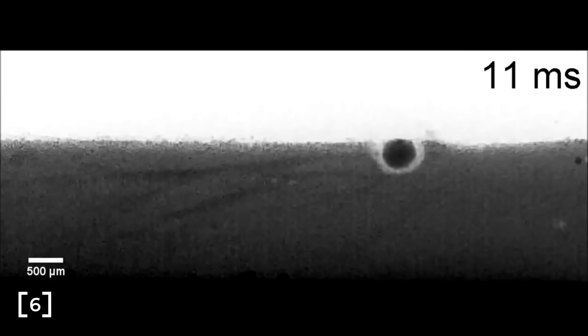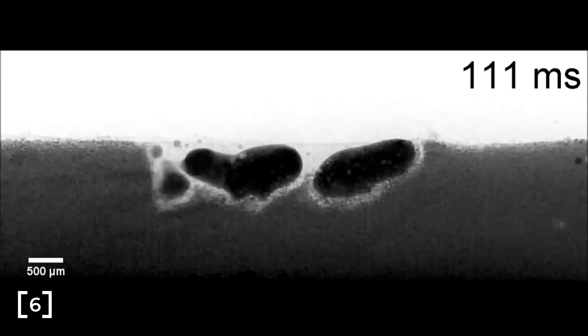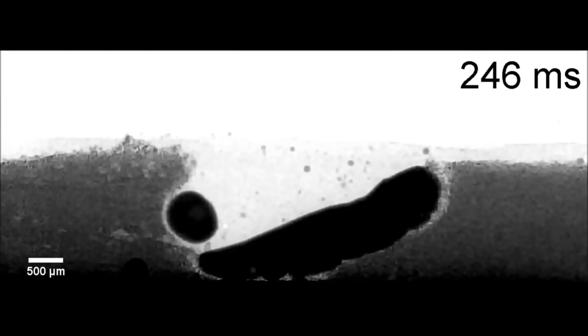Although it's important to note that this study was specifically studying something called an overhang condition, where the part has no structure below it and has to build on the loose bed of powder instead. As the laser marches on, the powder in front of it gets blown away, meaning the laser no longer has metal powder to melt in that region and instead forms new beads of molten metal ahead of the original track, which eventually coalesces with the original.